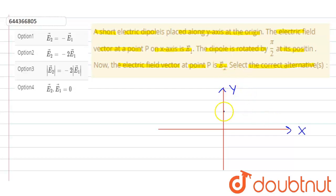Now it is written dipole is placed along y-axis. Suppose the dipole is like this. Here a and here b. It is minus q and it is plus q.